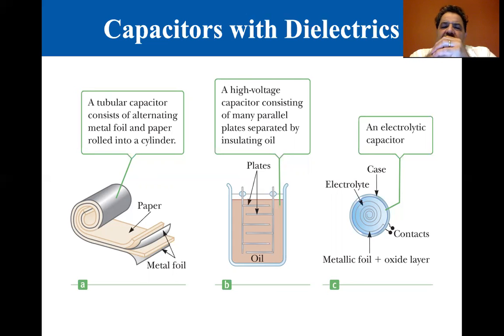A high voltage capacitor consists of many parallel plates separated by insulating oil. Sometimes they use gas, sometimes they use SF6 sulfur hexafluoride, which is used in some applications.